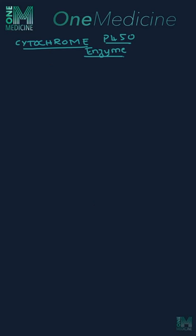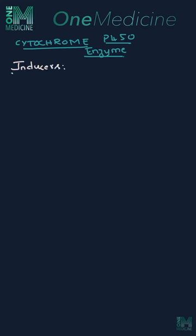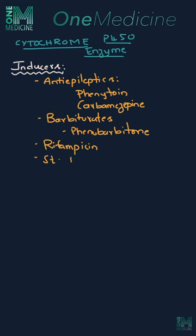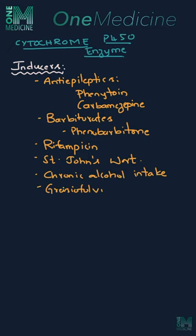Acute alcohol intake. Inducers of P450 enzymes include anti-epileptics such as phenytoin and carbamazepine, barbiturates, phenobarbitone, rifampicin, St. John's wort, chronic alcohol intake, griseofulvin, and smoking.